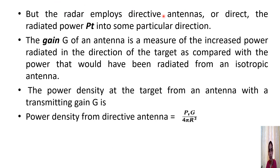Usually radar employs directive antennas that radiate power in a particular direction only with a very narrow beamwidth. The gain of an antenna is expressed as the ratio of the power radiated by the required antenna to the power radiated by an isotropic antenna, given the same input power. From the isotropic antenna expression Pt/(4πR²), the power density from a directive antenna is given by Pt × G divided by 4πR².